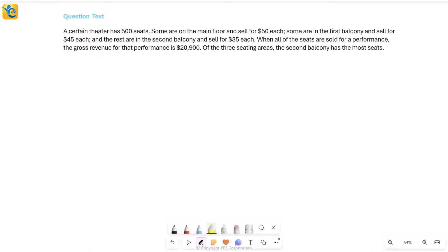Let's solve this question. This is about a certain theater where we have a total of 500 seats. There are three places where these seats are: some on the main floor, some in the first balcony, and some in the second balcony. The price per ticket is different in these different places. The seats on the main floor sell for $50 each, then the first balcony seats sell for $45 each, cheaper than the main floor.